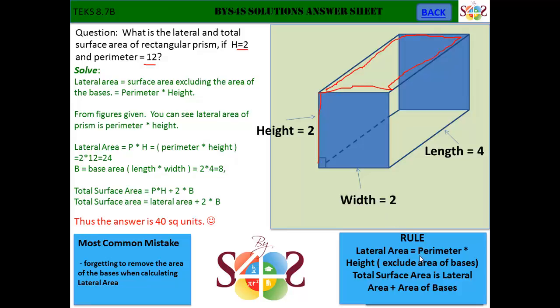And the lateral surface area is perimeter times height, which in this case is 2 times 12, which is 24.